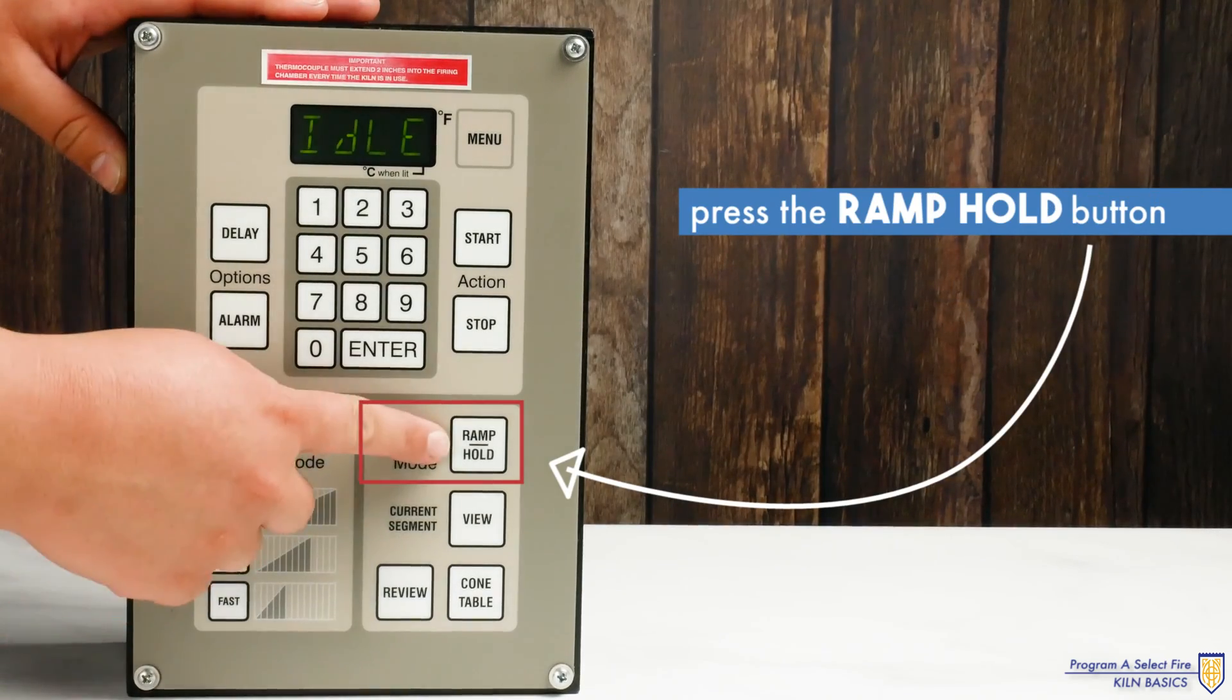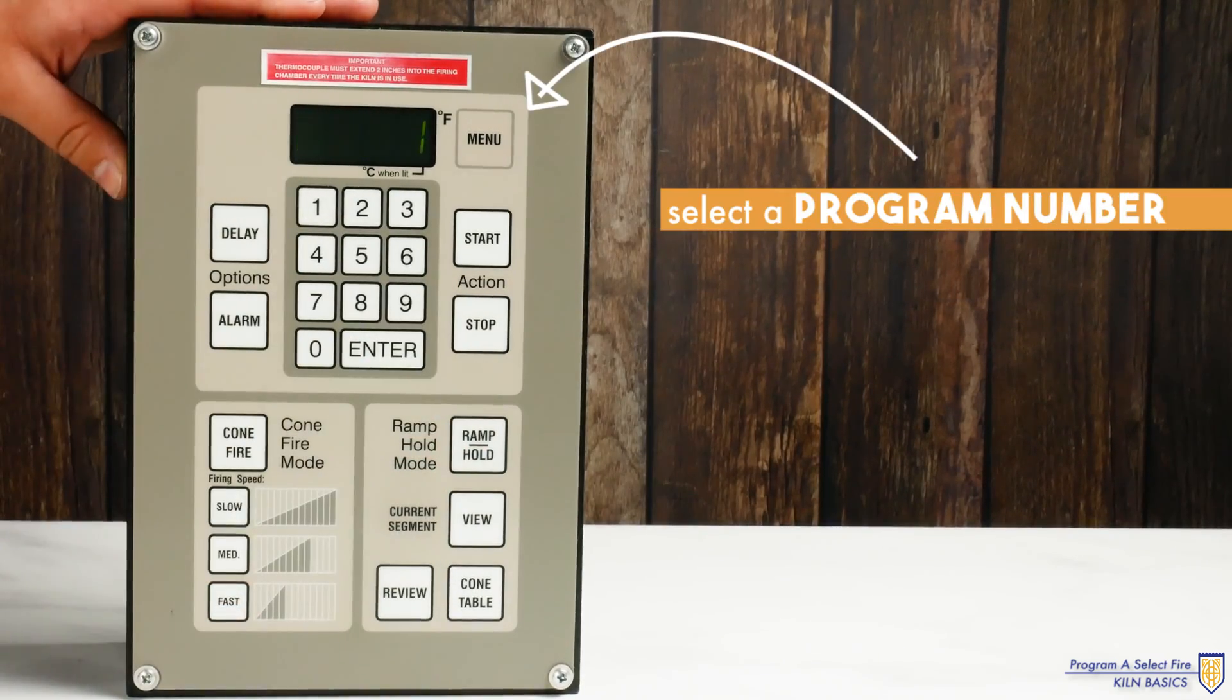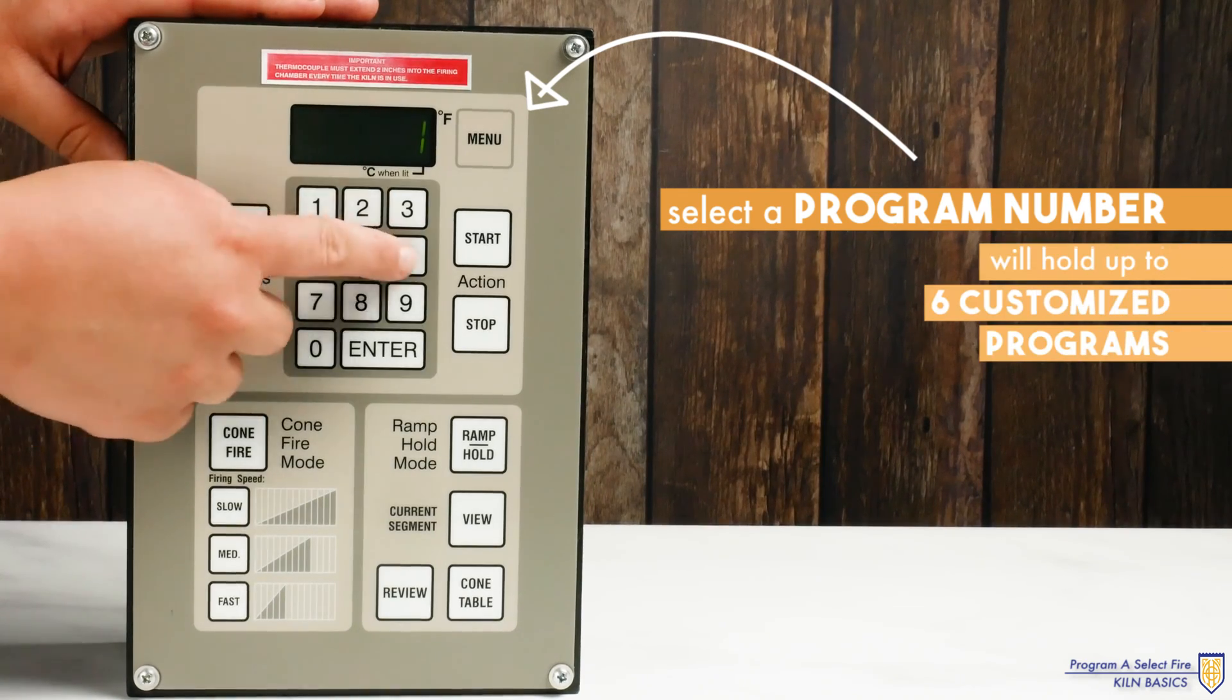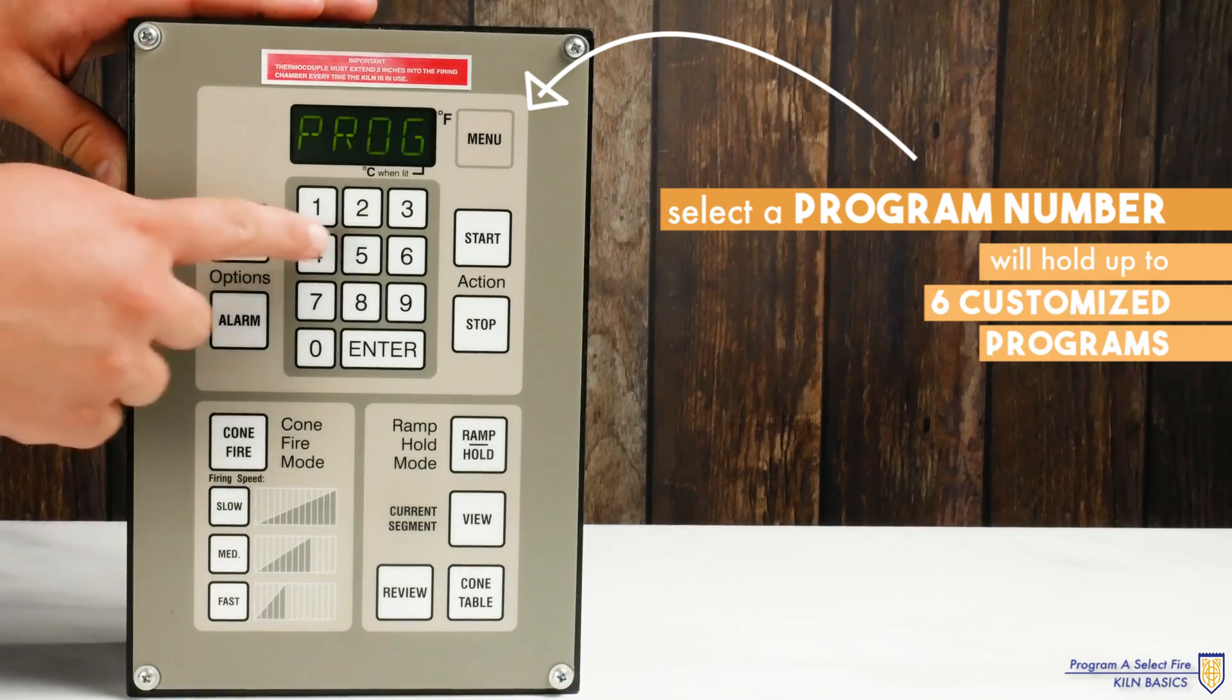Press the ramp hold button. It will prompt you to select a program number. This controller will hold up to six customized firing programs.